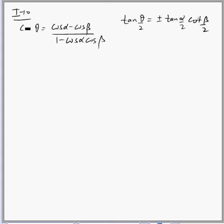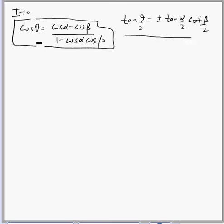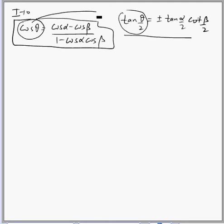So this expression is given, and using this expression we have to prove this expression. Now if you just look at this expression, this is the θ term in this expression, and what we have to prove also contains a θ term. So we need to find a way to relate these two θ terms, and you know it's a typical trigonometry formula: 1 minus cos θ over 1 plus cos θ equals tan²(θ/2).